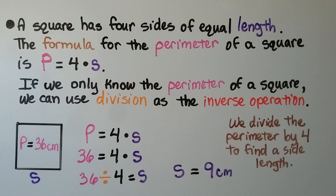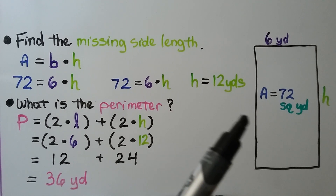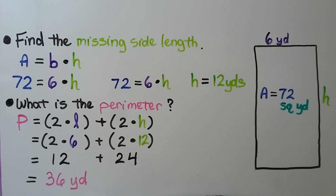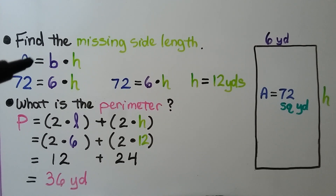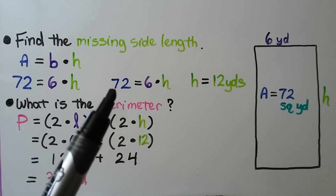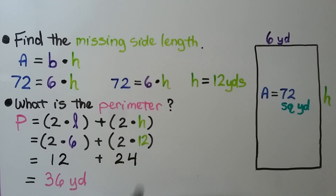We divide the perimeter by 4 to find a side length for a square. Now let's find the missing side length of a rectangle. One side is 6 yards and the area is 72 square yards, but we don't have the height. Using the formula: area equals base times height, we have 72 equals 6 times h. That would be 6 times 12, so h equals 12 yards.